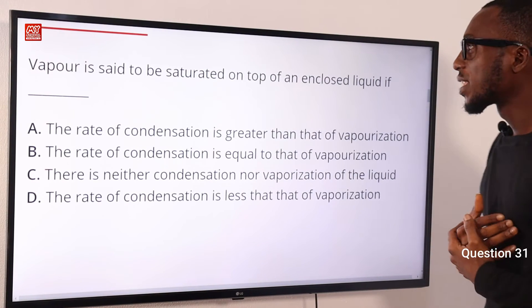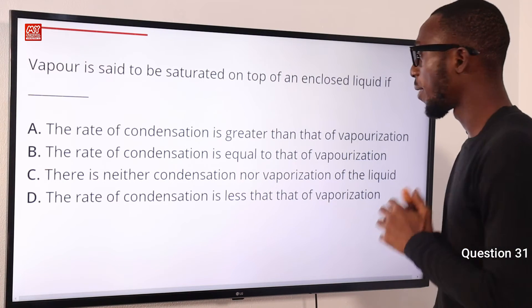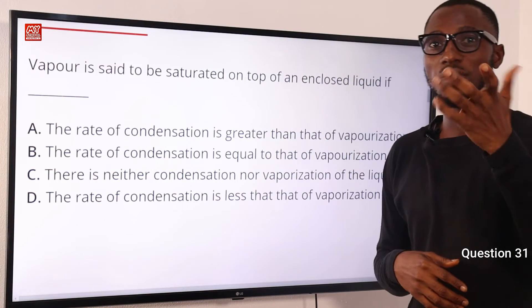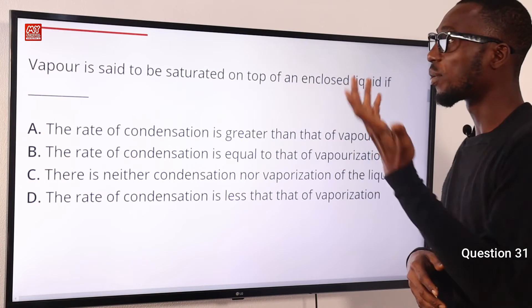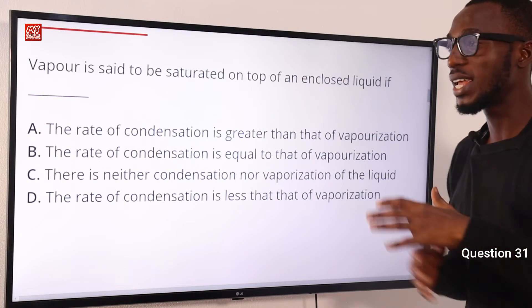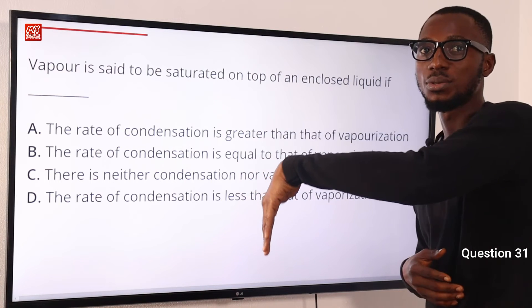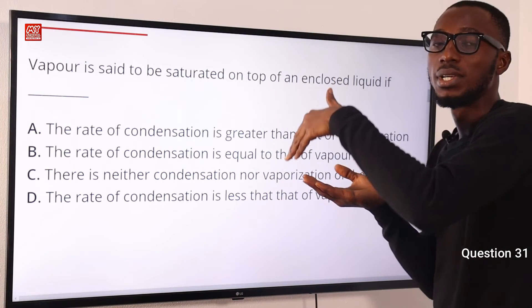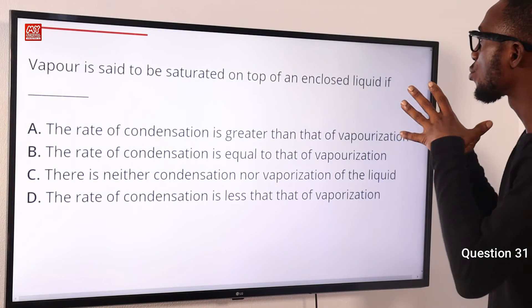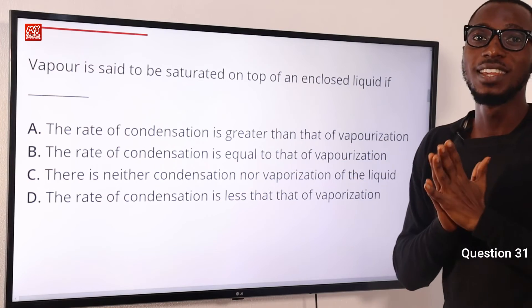Number 31. Vapor is said to be saturated on top of an enclosed liquid if what? If the rate of condensation is equal to that of vaporization. When molecules gain energy they turn into vapor and try to escape, but since it is a sealed enclosed container they return back into the liquid phase. A time comes when the amount becoming vapor equals the amount turning back to liquid — the rate of vaporization equals the rate of condensation. Option D is very correct.